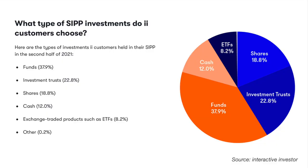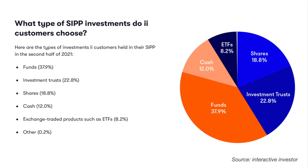Now let's look at what other types of SIPP investments are popular with Interactive Investor customers. Whilst most customers choose funds for their self-invested pension plan, investment trusts account for nearly 23%, shares nearly 19%, and 8.2% of customers choose ETFs within their SIPP portfolio. The most popular shares, funds, investment trusts and ETFs held by Interactive Investor SIPP customers are listed here, and this data is true as of February 2022. Of course this is not a recommendation — you need to choose investments that align to your own investment goals, attitude to risk and investment horizon.